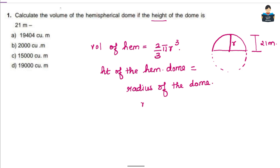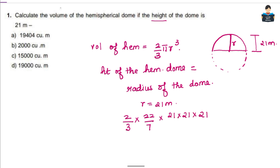So the radius r = 21 meters. The formula is volume of hemisphere = 2/3 × 22/7 × r³, that is 2/3 × 22/7 × 21 × 21 × 21.